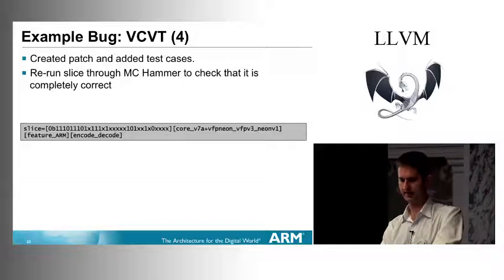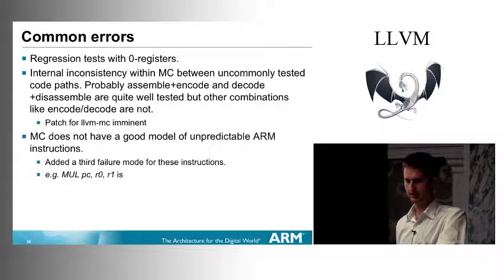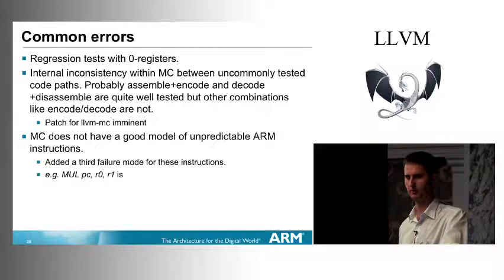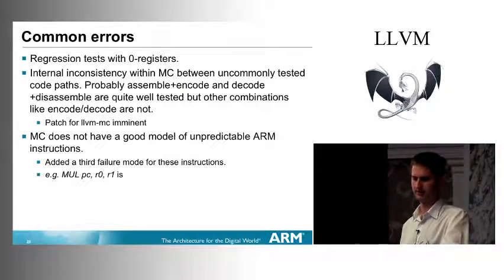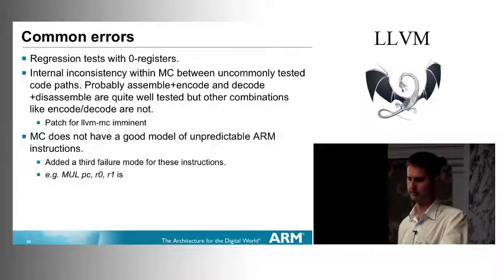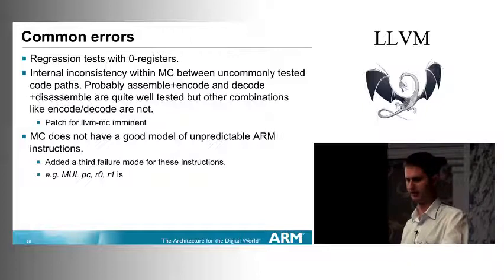We've been doing this for a few months and seen some common errors. The most common is a lack of internal consistency within MC. MC insts are very loosely defined — almost like a struct of void pointers. The commonly used paths for MC, such as assembling and encoding for an assembler, or decoding and disassembling for a disassembler, tend to correspond correctly to each other. But if you try to do something not on those paths, both phases expect different things and there's a problem.